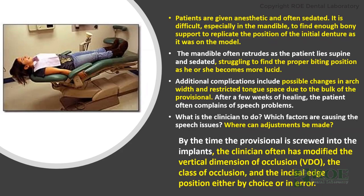Complications that can arise causing problems are arch width changes causing retracted tongue space, and a lot of it can be due to the bulk of the provisional — which has everything to do with where the teeth are placed. Once we put these in the patient's mouth the day of surgery, they can't talk well, and they're swollen. They've just had a lot of surgery and they're beat up and tired. Most doctors will say if you still have speech issues after a couple of weeks, we'll start attacking these problems, because sometimes within those two weeks everything works itself out. If it doesn't, where can we make adjustments? That's what this webinar is about.